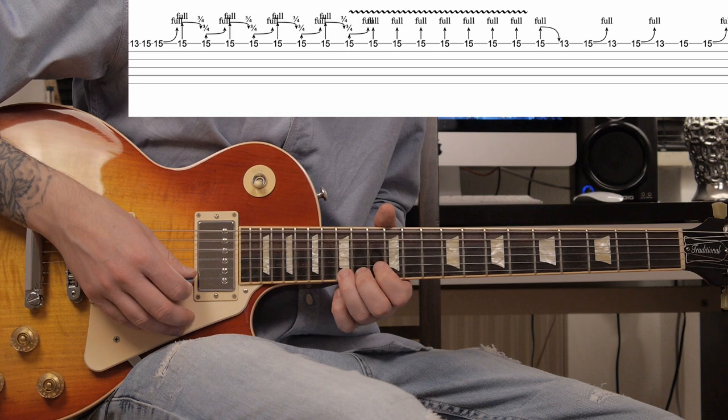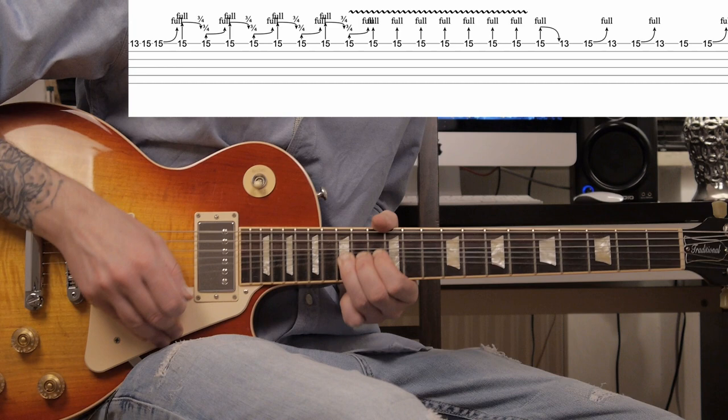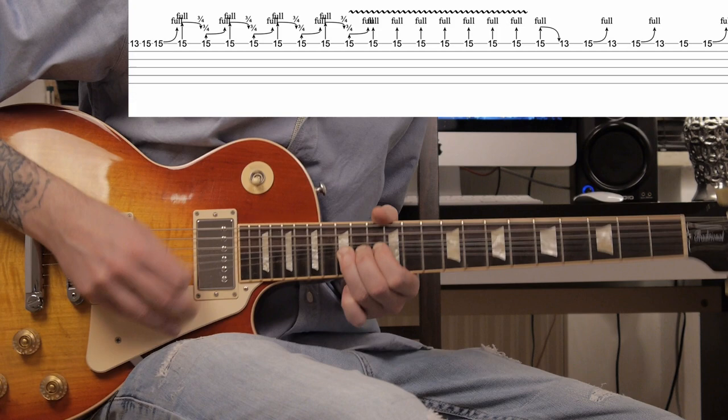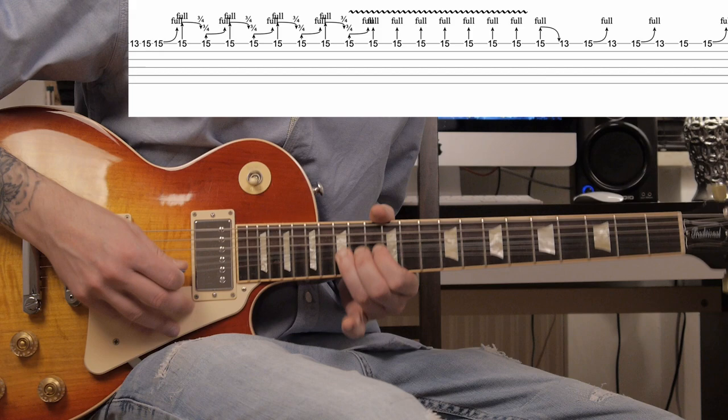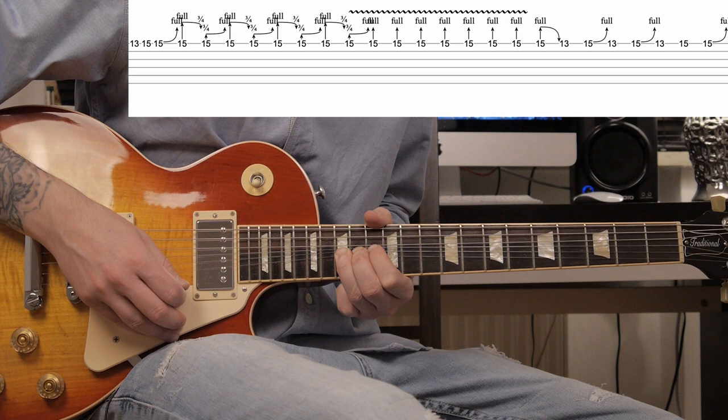So, full tone bend. And you hit the string and you really aggressively play a vibrato. I mean, maybe the whole guitar should shake, right? This is how Freddie did it. Okay, so we start like this: 13, 15 on the high E string. Full tone bend, release, push back.